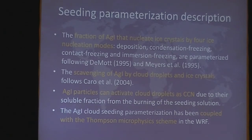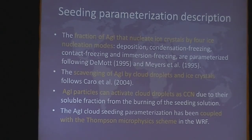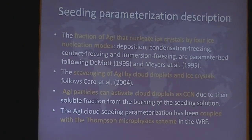Briefly, about the seeding parameterization — there are two papers coming out in the Journal of Applied Meteorology and Climatology that describe it in much more detail. This parameterization has several key physical features. It can simulate the fraction of silver iodide that nucleates ice crystals by four nucleation modes: deposition, condensation freezing, contact freezing, and immersion freezing, parameterized following DeMott and Myers parameterizations. It also simulates the scavenging of silver iodide by cloud droplets and ice crystals, and can activate cloud droplets on the silver iodide so they serve as CCN due to their soluble fraction. The cloud seeding parameterization has been coupled in the WRF model in the Thomson microphysics scheme.